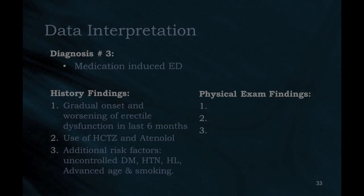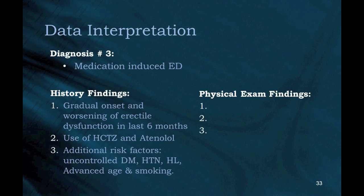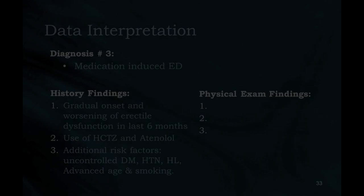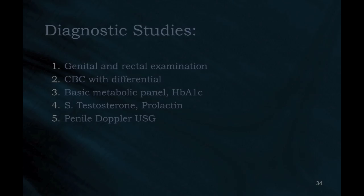Diagnosis 3: Medication-induced erectile dysfunction. History findings: (1) Gradual onset and worsening of erectile dysfunction in last 6 months; (2) Use of hydrochlorothiazide and atenolol; (3) Additional risk factors: uncontrolled diabetes mellitus, hypertension, hyperlipidemia, advanced age, and smoking.